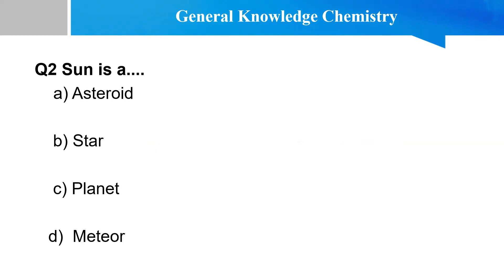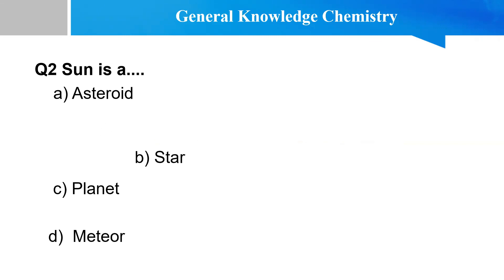Question 2, most repeated MCQ: What is the sun? Options: Asteroid, star, planet, meteor. The right option is star — the Sun is a star.